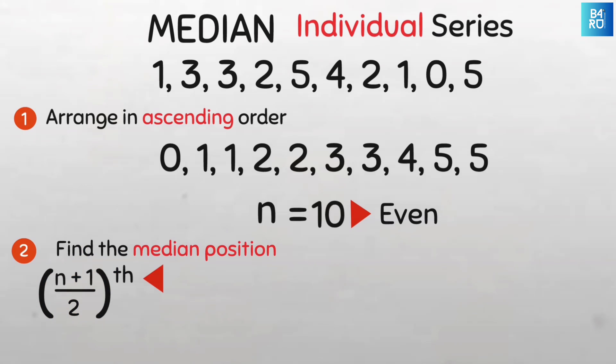So the median position will be n which is 10 plus 1, all divided by 2. That's 11 divided by 2 which will give us 5.5. So our median is going to be in this position.